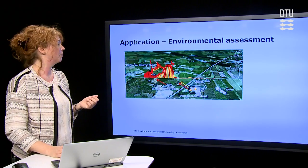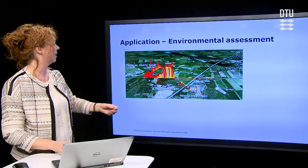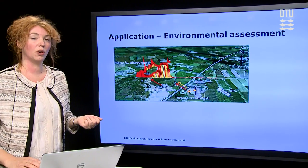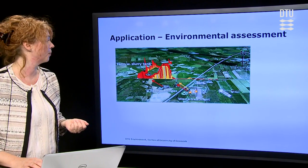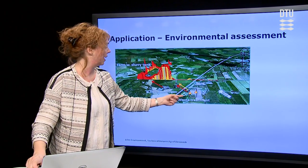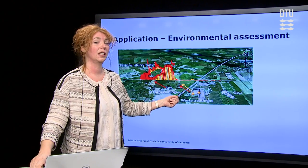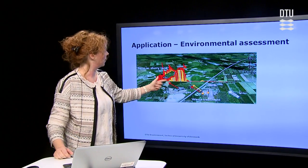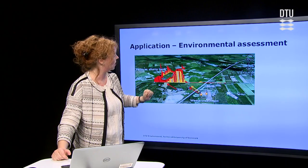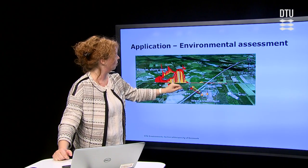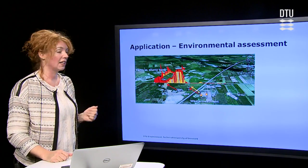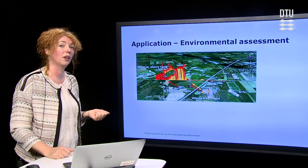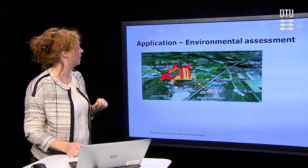Now I'll show you some methane plumes from another site. Here we have a waste treatment facility that treats source-separated organic household waste — first in an anaerobic process where they produce biogas, and then in an aerobic process where they produce compost. Here you see the downwind methane plume and the orange is the tracer gas plume. At this site, we measured a methane emission of about 30 kilograms per hour and a nitrous oxide emission of about one to two kilograms per hour.